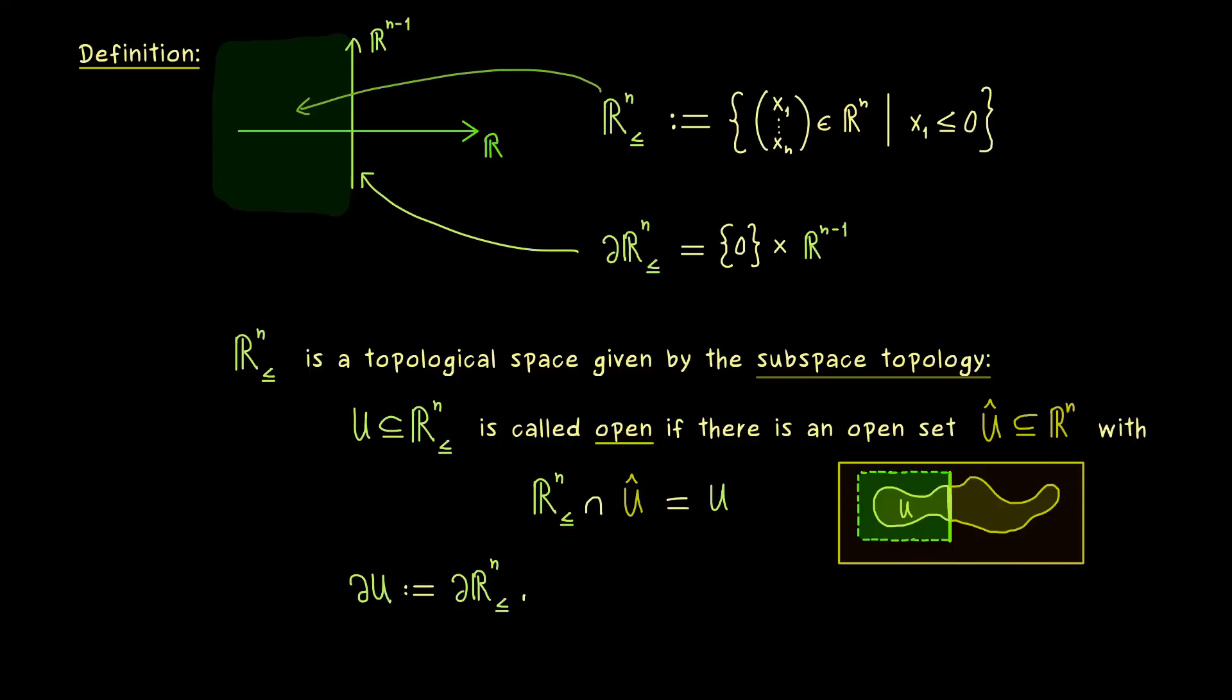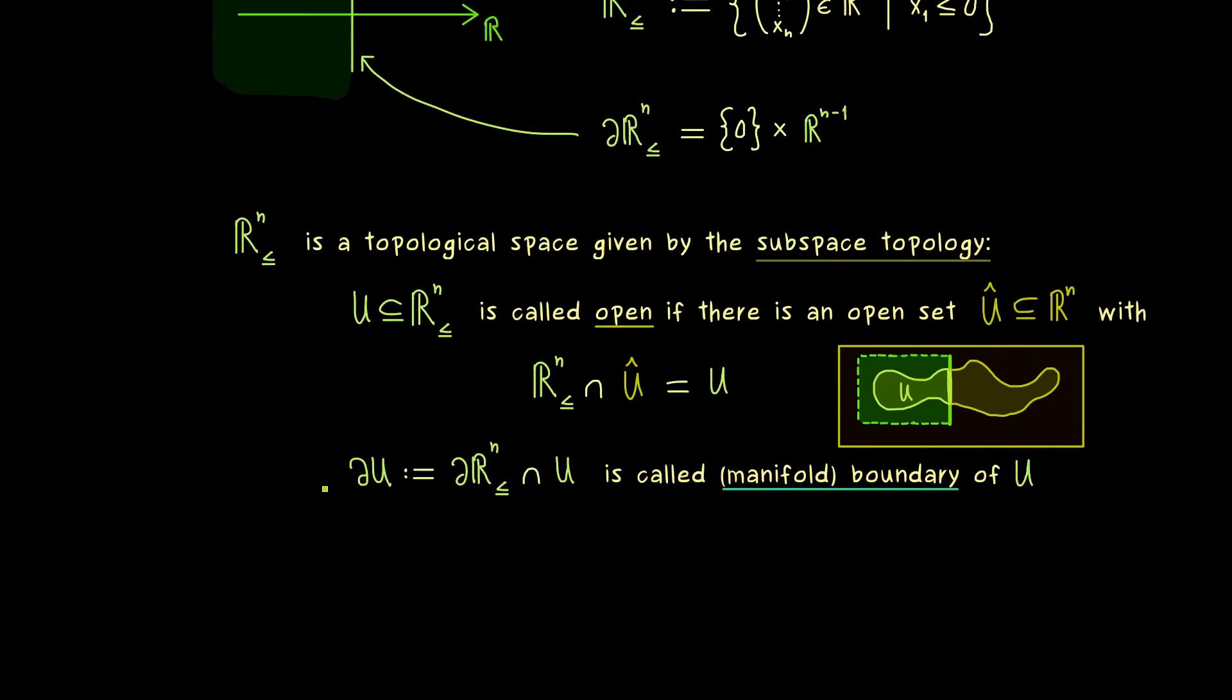And now you might already guess that this boundary also gets a name with this partial d. So what we do is that we just take all the points from u that lie on the boundary of the half space. Therefore this is what we would call the boundary of u. But again as before, it's not our topological boundary as we already have it. And therefore maybe we should call it manifold boundary of u. So you see we already go into the direction of a manifold.